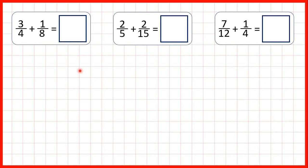Here we're adding fractions, but we have a problem because to add fractions we need the denominators to be the same, and here our denominators are different. So what we need to do is use equivalent fractions to help us make the denominators the same.